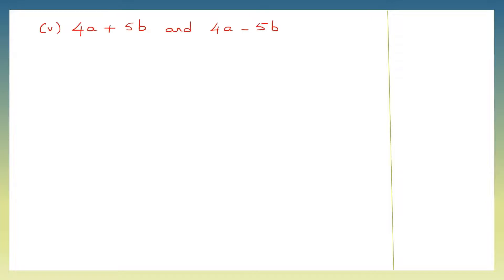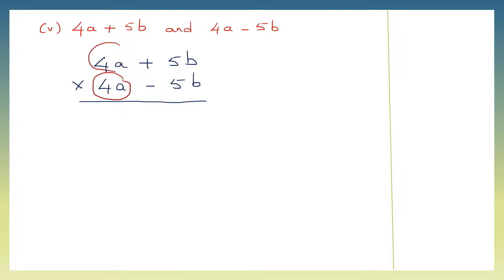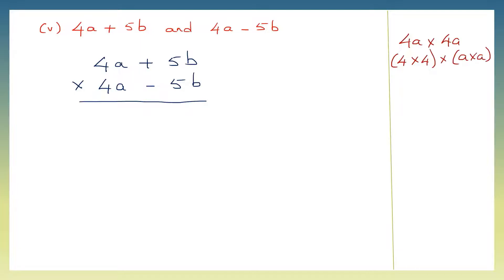Question 5: 4a plus 5b and 4a minus 5b. Let's write 4a plus 5b multiplied by 4a minus 5b. Let's start by multiplying 4a first with 4a. We'll multiply the numbers 4 into 4, then a into a. 4 fours are 16, and a into a — we have a to the power of 1 and a to the power of 1, that makes it a squared. So first we have 16a squared.